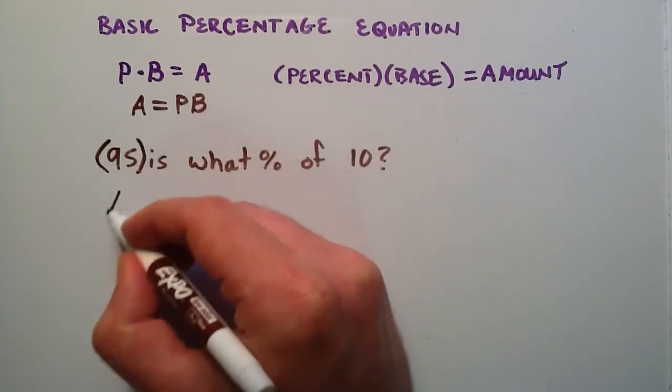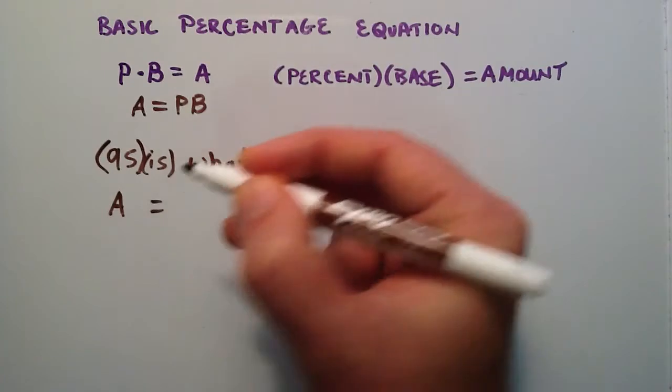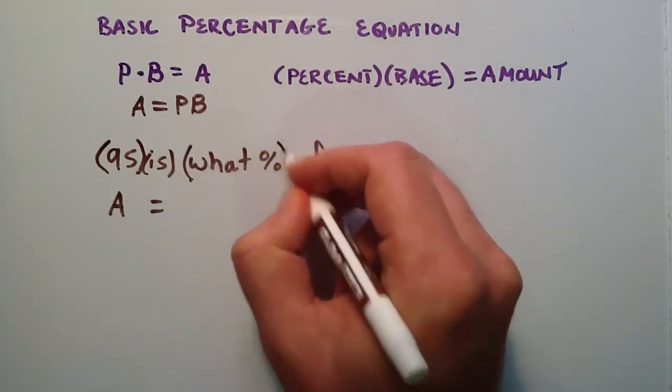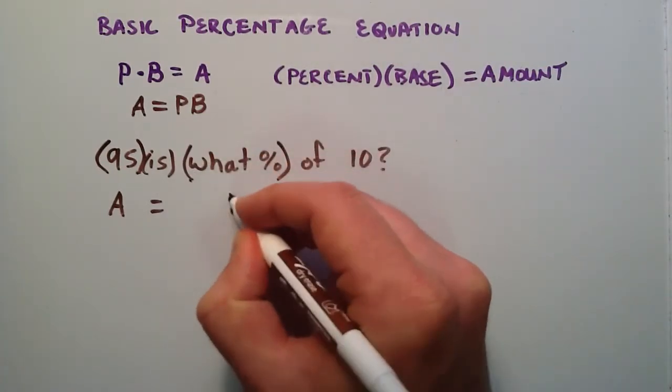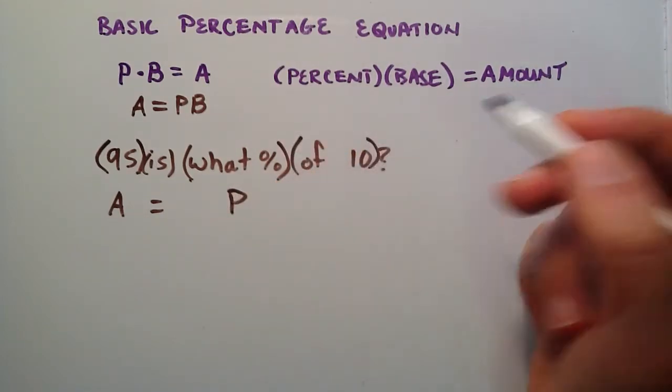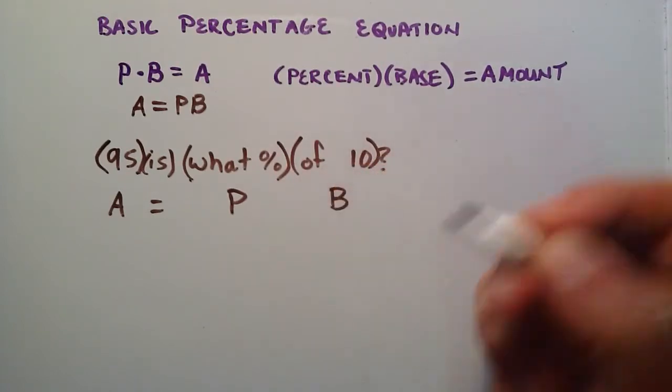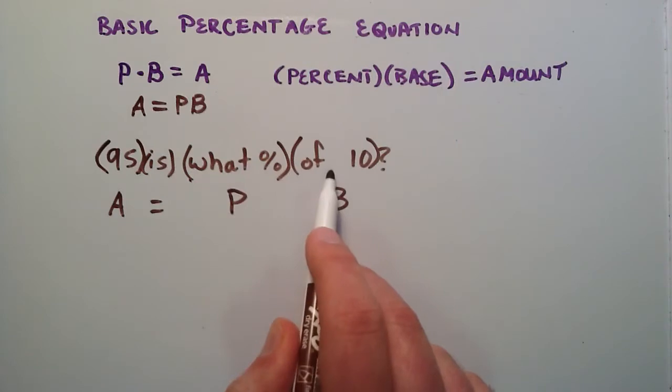Just to make that sink in a little more, let's say 95 is our A. Is is the same thing as equals. What percent, that's what we're looking for, we're looking for the P. And then of 10 would be our base. 10 is our base, so we'll put B here. This is our A equals P times B.